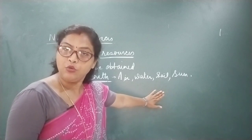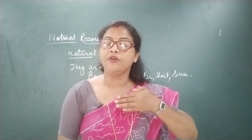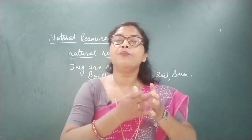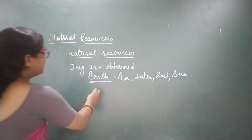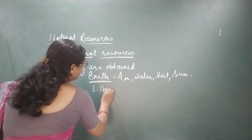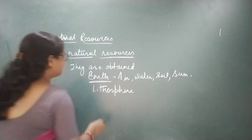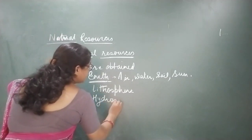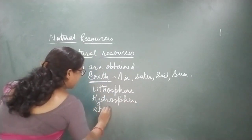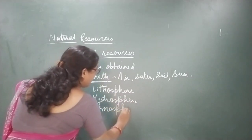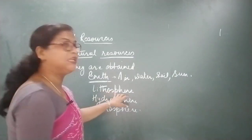From where do we get all this air, water and soil? Around the earth there are three layers — three parts. They are called lithosphere, hydrosphere and atmosphere. Lithosphere, hydrosphere and atmosphere.